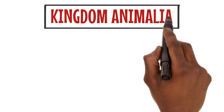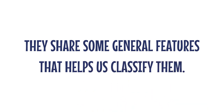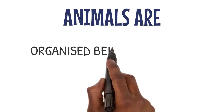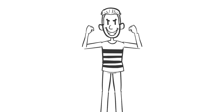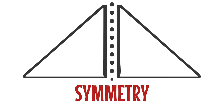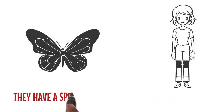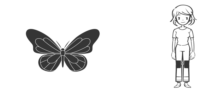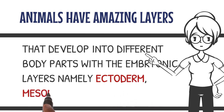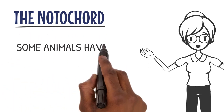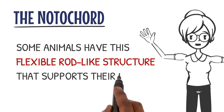Let's talk about the Kingdom Animalia. Animals come in all shapes and sizes, but they share some general features that help us classify them. Animals are organized beings — they have cells, tissues, organs, and systems that work together to keep them alive. Next, let's talk about symmetry. Some animals, like butterflies and humans, have a special kind of balance in their bodies, like having a mirror image down the middle. Animals have amazing layers that develop into different body parts, beginning with the embryonic layers: ectoderm, mesoderm, and endoderm. And last but not least, the notochord — some animals have this flexible rod-like structure that supports their bodies.